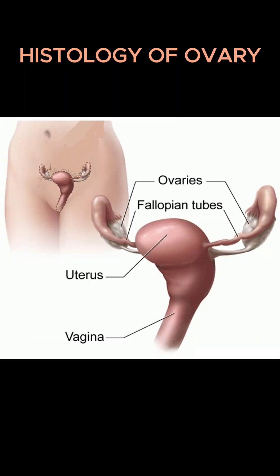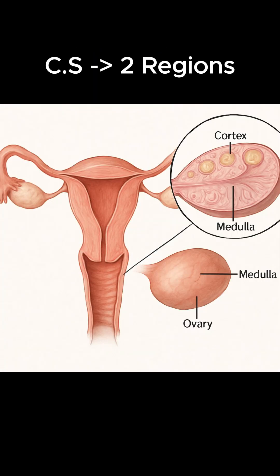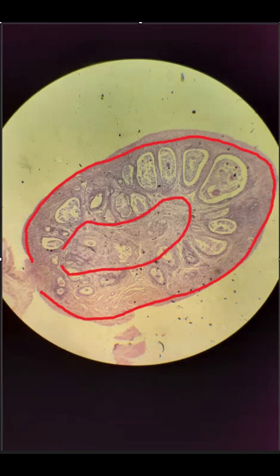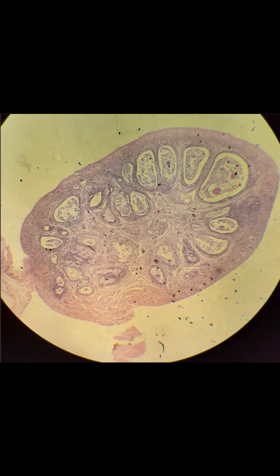The ovary, which is a part of the female reproductive system, has a complex architecture. The cross-section of the ovary is divided into two main regions: the cortex and the medulla. The cortex contains ovarian follicles, which are the functional units where oocytes develop.